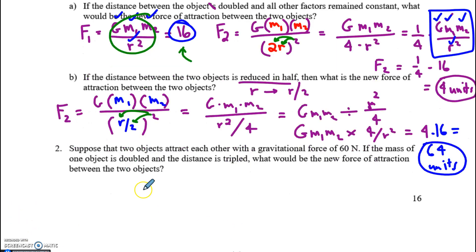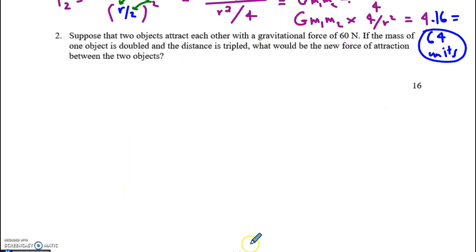On to number 2. Suppose that two objects attract each other with a gravitational force of 60 Newtons. If the mass of one is doubled and the distance is tripled, what would be the new force of attraction? My first gravitational force is G times M1 times M2 over R squared. And by the way this first force is 60.